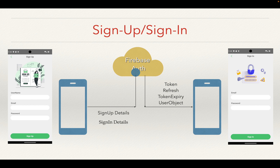Initially, we pass the data to the cloud and Firebase authenticates it for the sign-in flow. It then sends the token, refresh token, token expiry, and user objects back to the device. Once everything is authenticated and written to the device, the app logs the user into the application. For sign-up, we send all sign-up details to Firebase and Firebase stores them in the Firebase Authentication system. We will see how it stores data in real time along with code snippets.